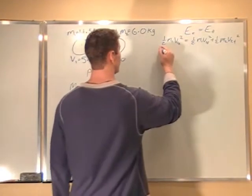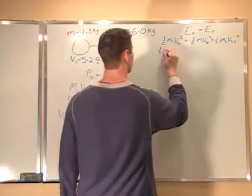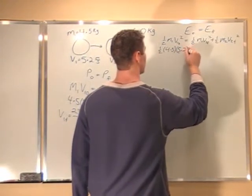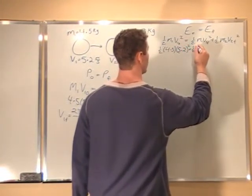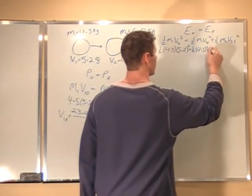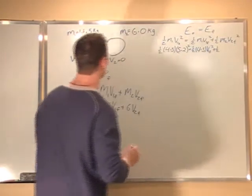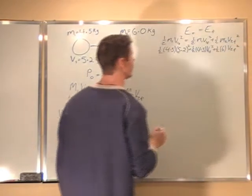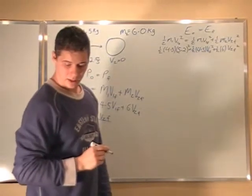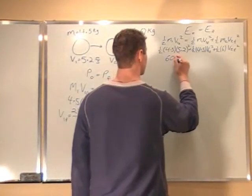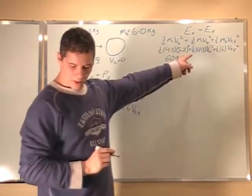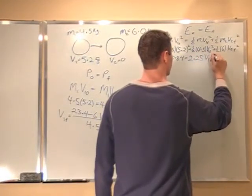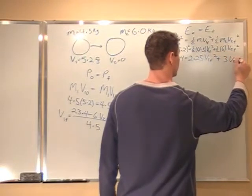So I'm just going to plug in the numbers I know. I have 1 half M1 is 4.5, V1 squared is 5.2 squared. So if I run these numbers through I get 60.84 equals 2.25 V1 final squared plus 3 V2 final squared.